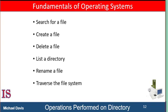We search for a file — we need to be able to search a directory structure to find the entry for a file. Since files have symbolic names, and similar names may indicate a relationship among files, we may want to find all files whose names match a pattern. We also create a file — new files need to be created and added to the directory. And of course we also delete files. When a file is no longer needed, we want to remove it from the directory. Note: a delete leaves a hole in the directory structure, and the file system may have a method to defragment that directory structure.